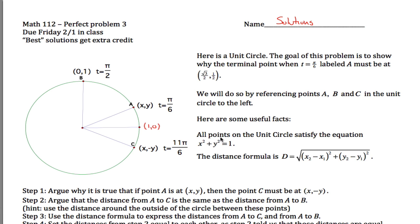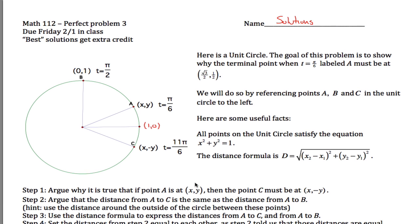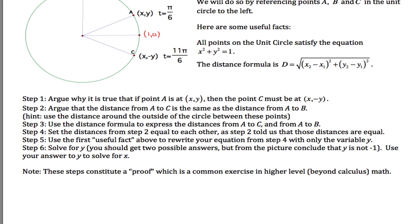First of all, every point on this unit circle satisfies this equation, x squared plus y squared equals 1. That just comes from the general equation of a circle by changing the center to (0,0) and the radius to 1. And then we'll use this distance formula here, which comes from the Pythagorean theorem. And the way we'll do it is we'll kind of follow all these steps here, so I'll just go through them one at a time.